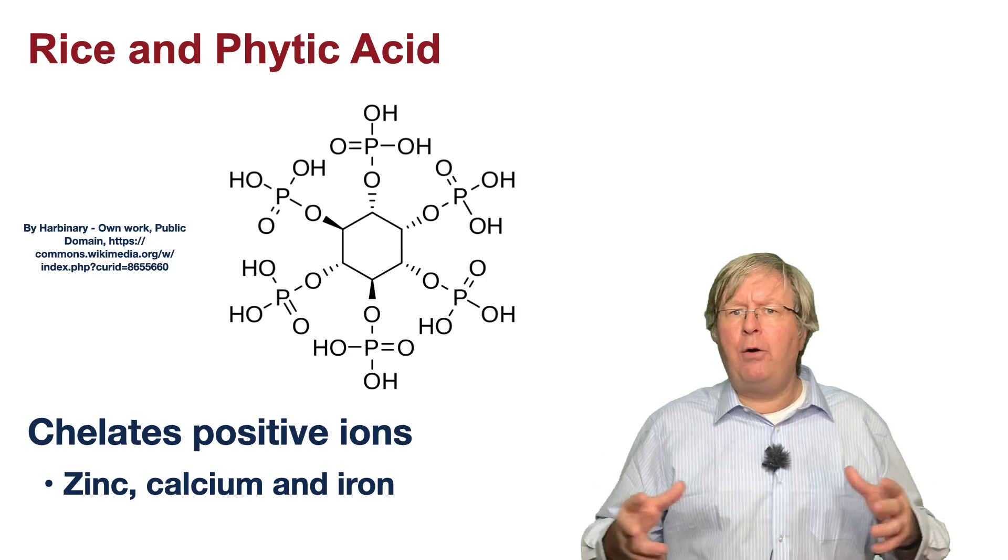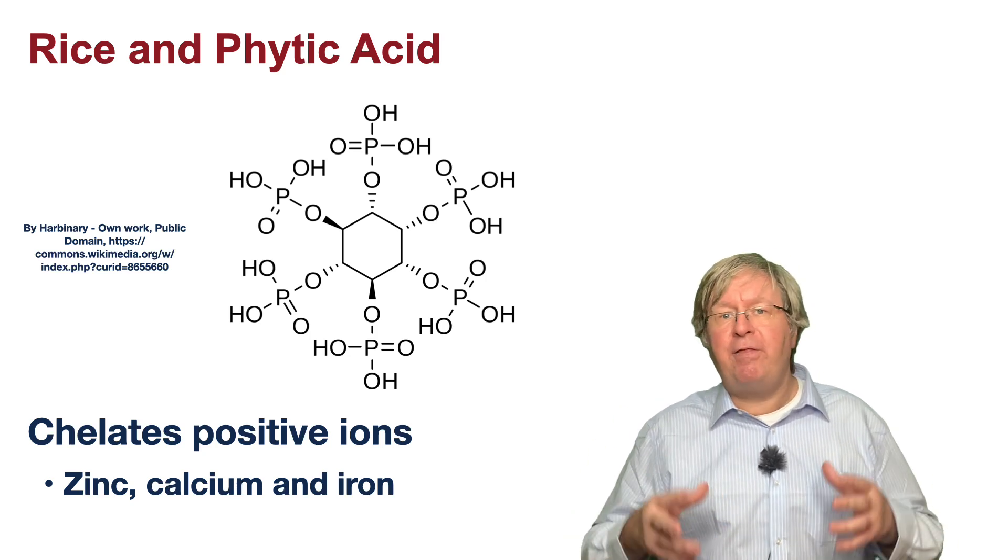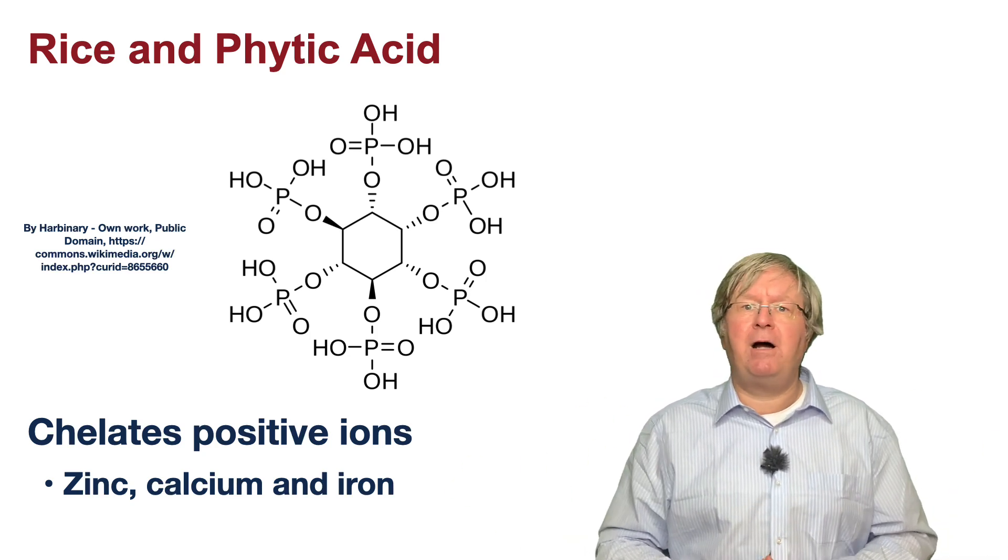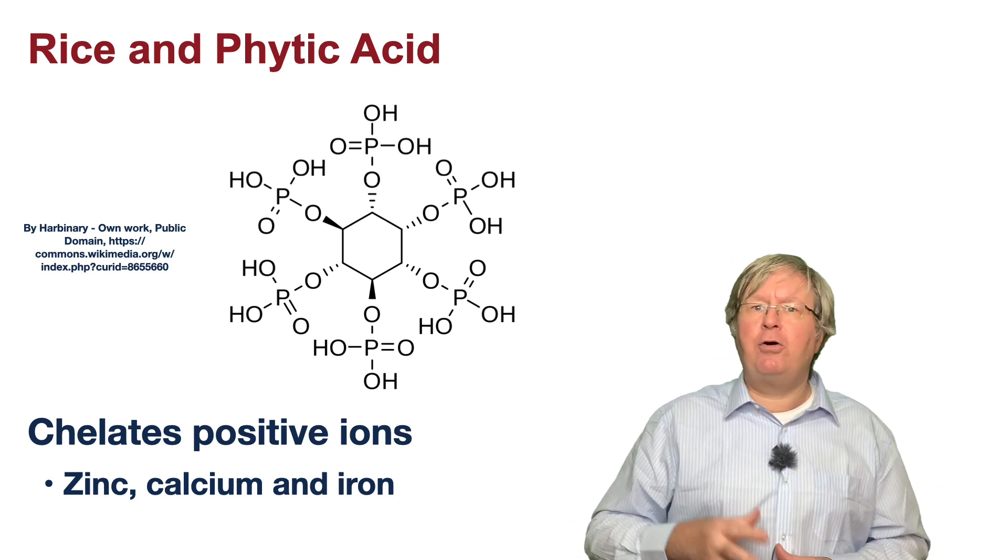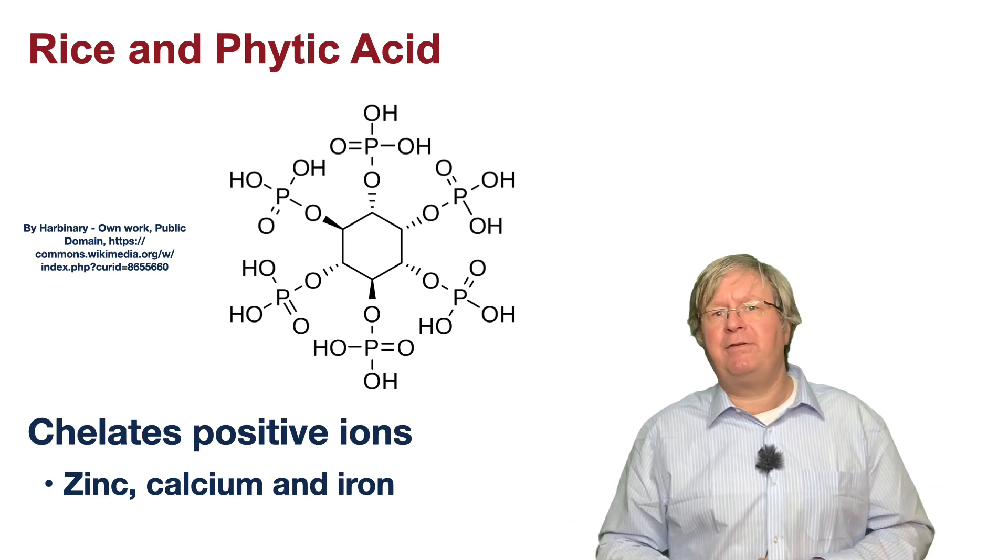So if you have a poor diet low in iron and heavy in rice, then the phytic acid will bind the iron so it is not available. Therefore, a rice low in phytic acid could mean more iron is available from the diet.